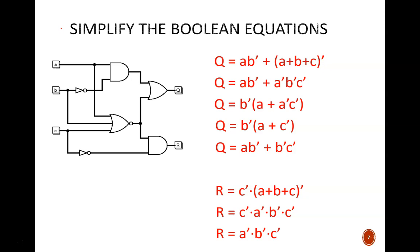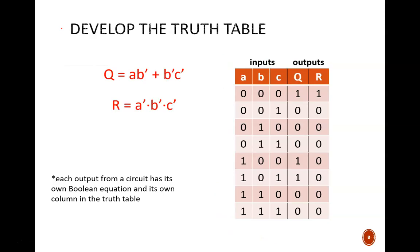Compared with the original equations for Q and R, these ones are a little easier to understand, and certainly easier to make a truth table from. That's what we do next. We see that R is only true in the case where all inputs are false. We also see that Q is true for these three rows.